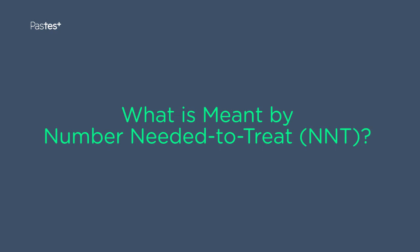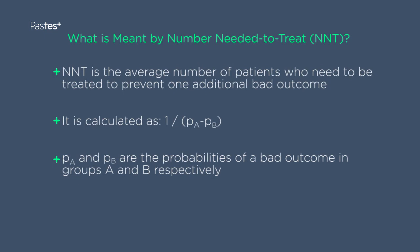Often written down as NNT. Essentially, number needed to treat is an alternative statistic for presenting the results of a comparative trial where the outcome measure in that trial is categorical. So it's usually used in situations where the outcome is something like did the patient survive or die, or did the patient respond or not respond to treatment? Number needed to treat is the average number of patients who would need to be treated to prevent one additional bad outcome.